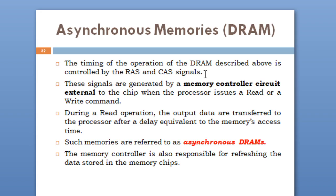These signals are generated by a memory controller circuit external to the chip when the processor issues a read or write command. During a read operation, the output data are transferred to the processor after a delay equivalent to the memory's access time. Such memories are referred to as asynchronous dynamic RAMs. The memory controller is also responsible for refreshing the data stored in the memory chip, since periodic refreshing is required for dynamic RAM.